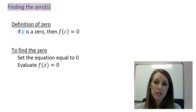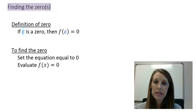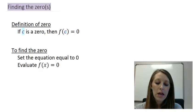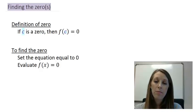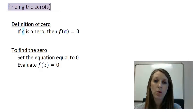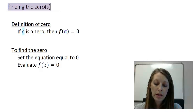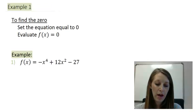The definition of a zero: here they call it c. If c, meaning a number, is a zero of the function, then f(c) is equivalent to zero. So meaning if we ever want to find the zero of a function, we just set our function equal to zero. Let's see an actual example of this.